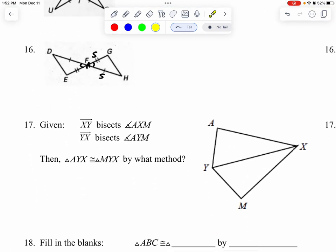Number 17, we have XY, which is this right here, bisecting, which means cutting in half, angle AXM. Where the heck is AXM?